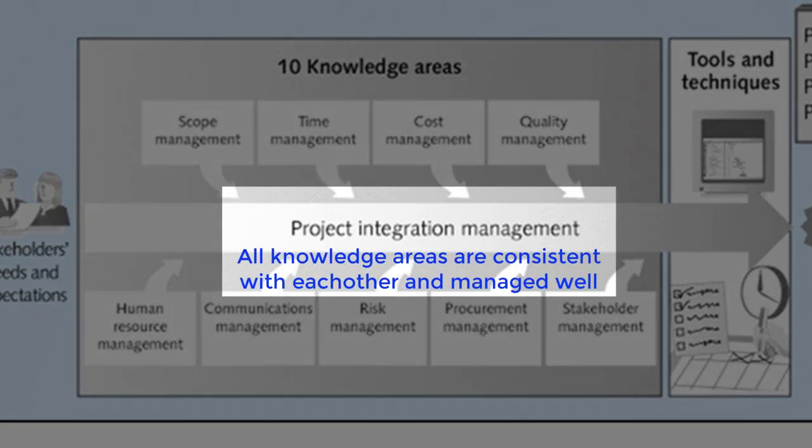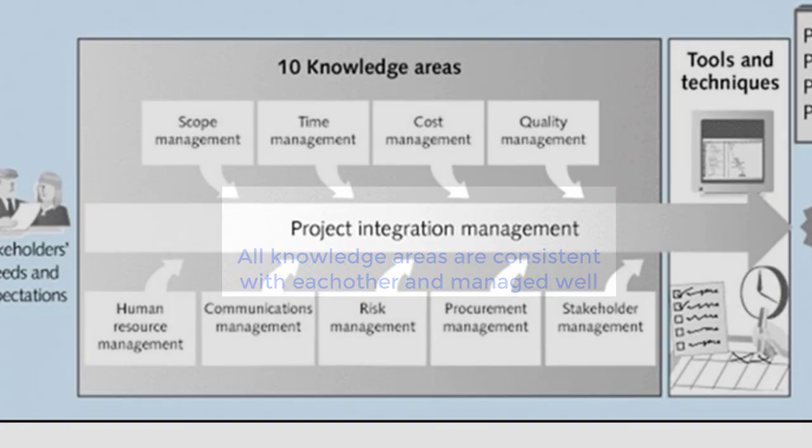Integration management is ensuring all the knowledge areas match well together. For example, that the scope of work matches the time available, that the costs have been estimated based on the scope, time, and quality required, and that the right people are in place to get the project done. All of these knowledge areas should be consistent with each other.